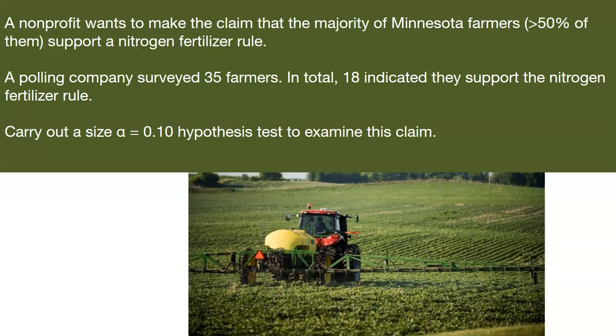And so the instructions here are to carry out a size alpha equals 0.10 hypothesis test that examines this claim. The instructions and the next series of calculations will conduct a hypothesis test that looks at these examples with the nitrogen fertilizer rule.